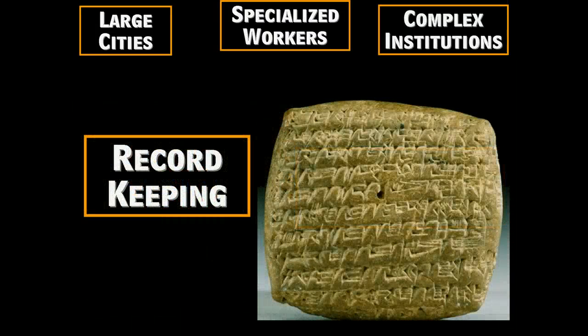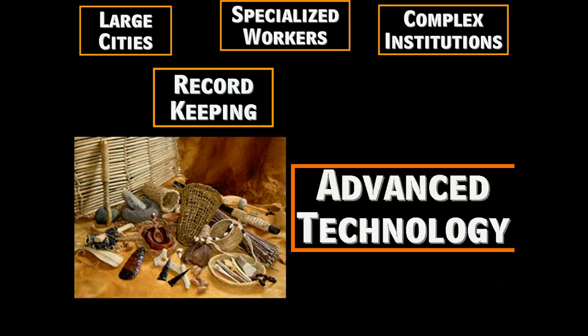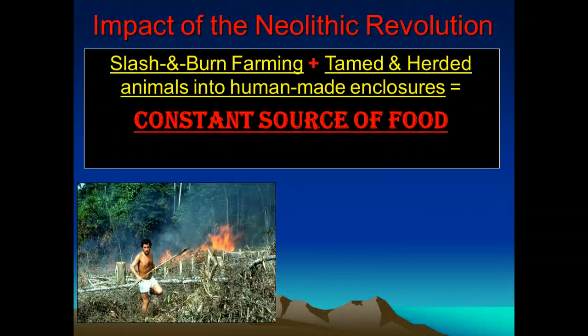Also the development of religious institutions. Because we're trading with people from distant lands, we began to try to write down what those dealings were, and this led to record keeping. Record keeping led to the very first form of writing. And specialized workers, as they become better at their jobs, are going to invent better and better tools — leading to something we call advanced technology. All five of these characteristics together make what we now call civilization.